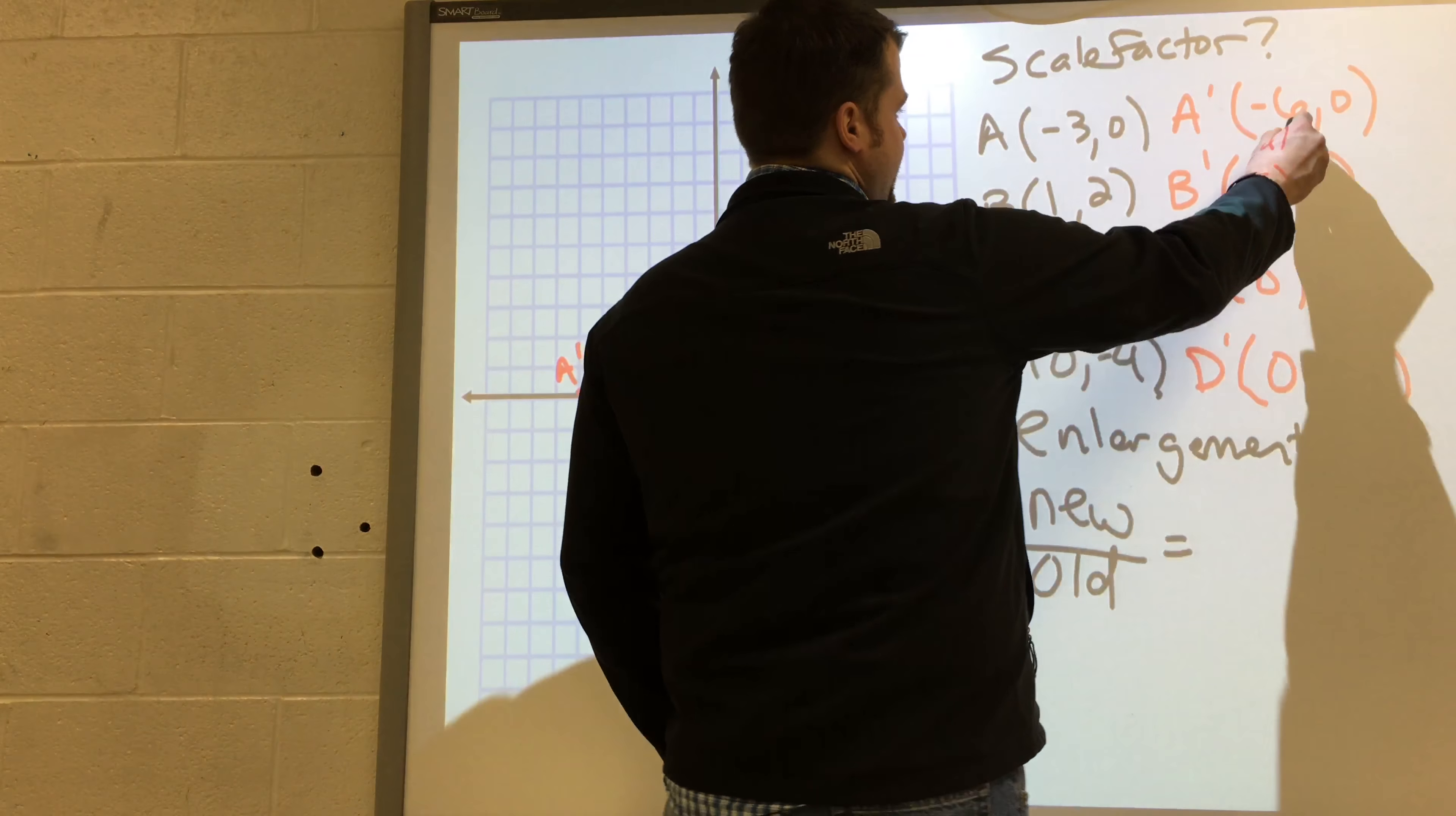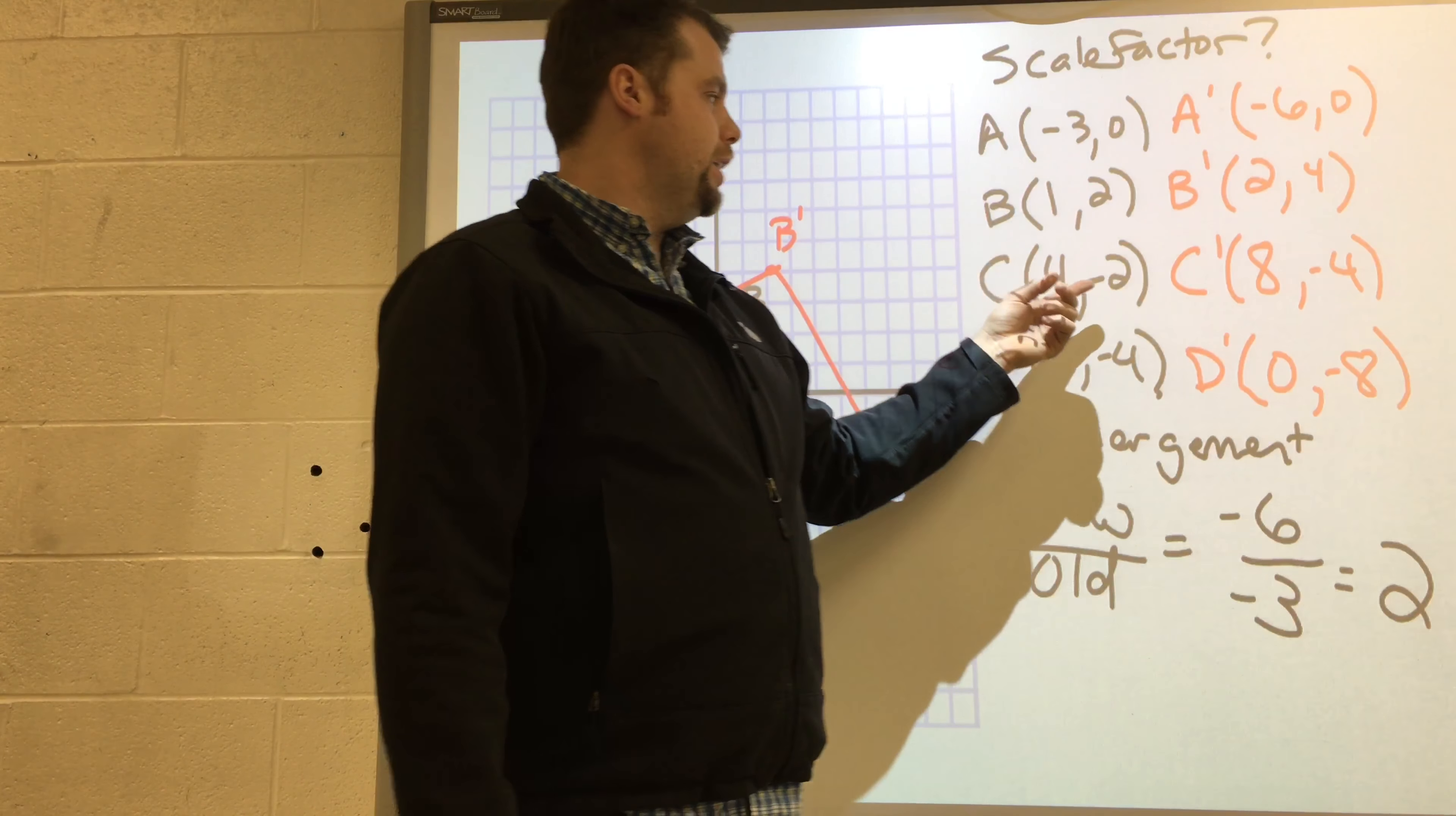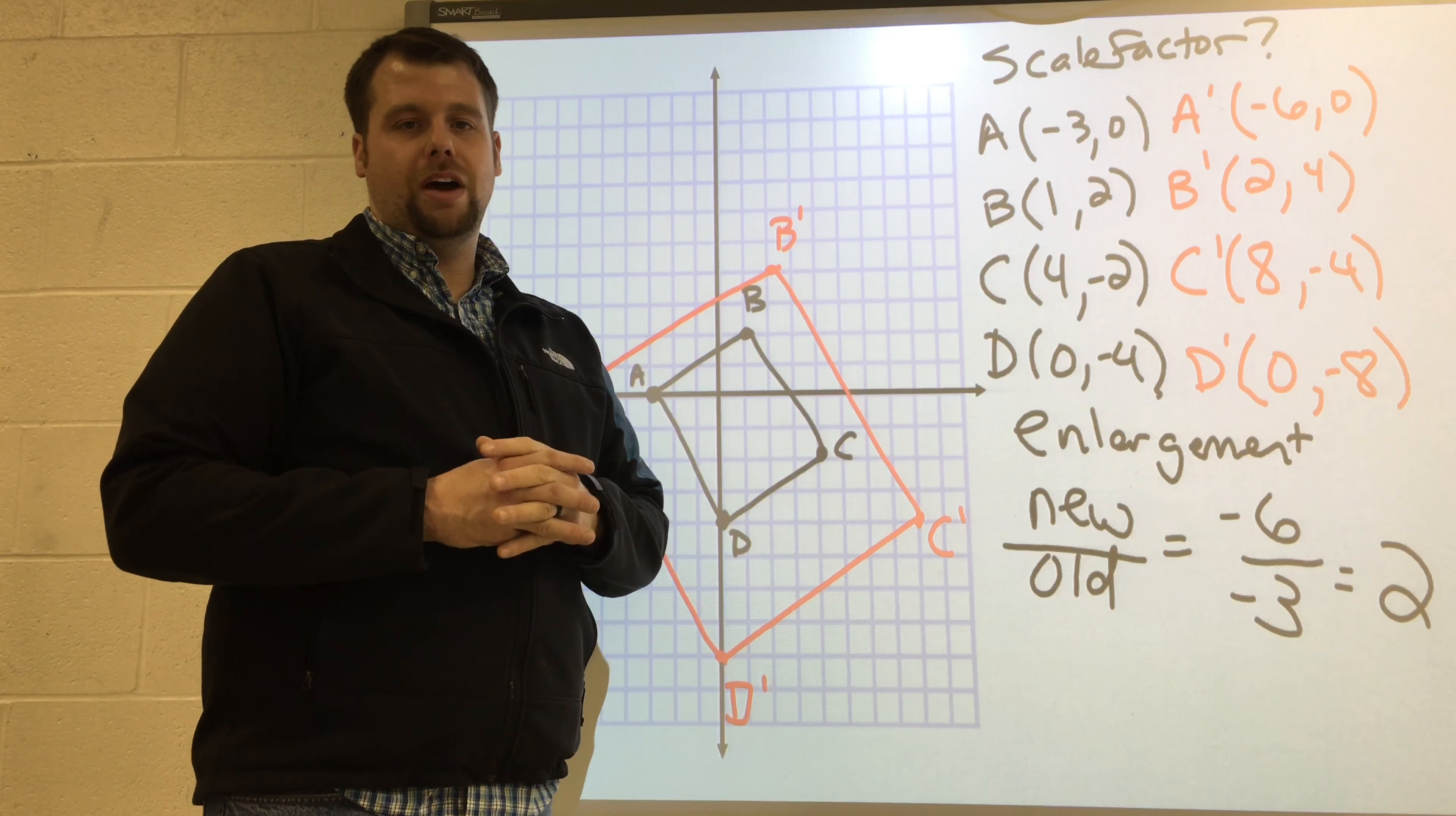Negative 6 is the X value from the new. Put that on top. Divided by the X value of the old, negative 3, negative 6 over negative 3, positive 2. And if I look at all the other points, you can see that 1, 2 was just multiplied by 2 to get 2, 4. 4, 4, negative 2, 8, negative 4, 0, negative 4, 0, negative 8. So, this has a scale factor of 2, and that is an enlargement. And again, I just found that by taking one piece and dividing it by another. New divided by old will be able to help you find the scale factor.